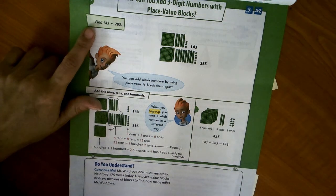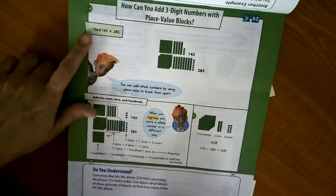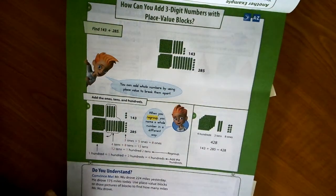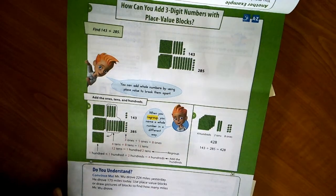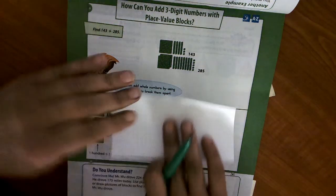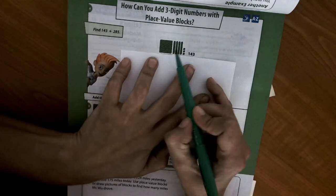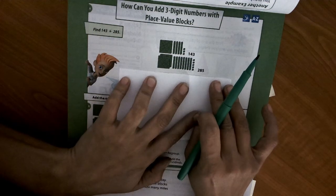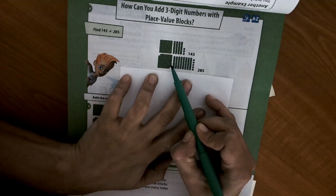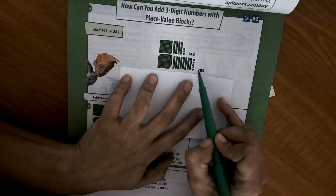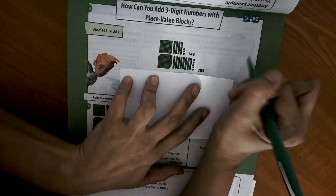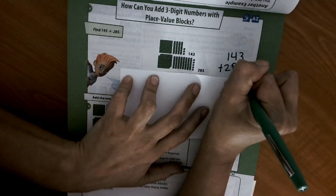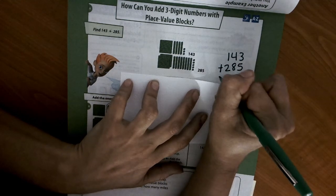This one says find 143 plus 285. And if you noticed, they gave us place value blocks. This first model right here is 143, and then there's a space. And the next one is 285. We are looking to figure out what is 143 plus 285. That's what we need to figure out.